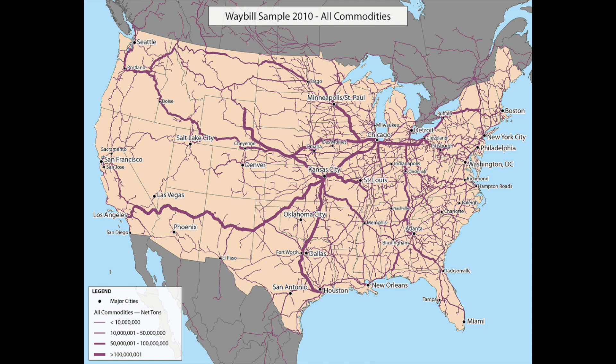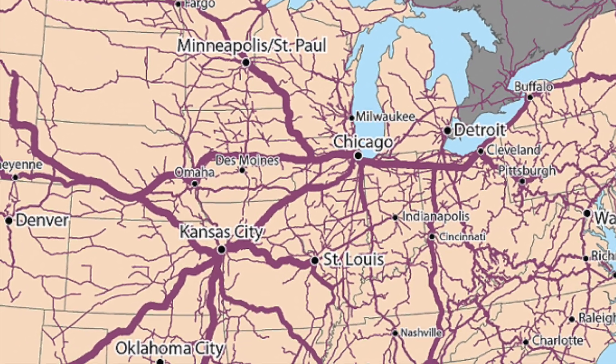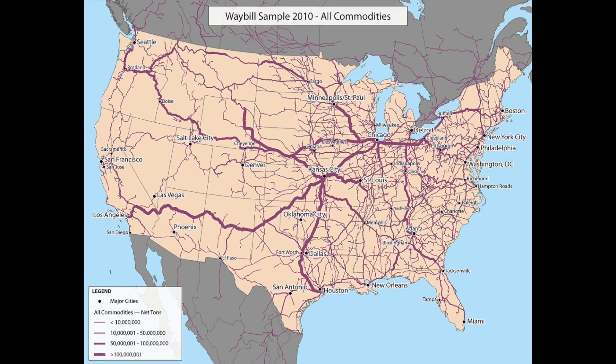This is showing us the travel routes of all commodities and goods in the United States, as well as parts of Canada and Mexico, from way back in 2010. I right away notice two major hubs: Chicago and Kansas City. Kansas City seems to be a split-off point, as does Chicago. I am surprised to not see thicker lines going from north to south on both coasts, but I guess that's what it is.